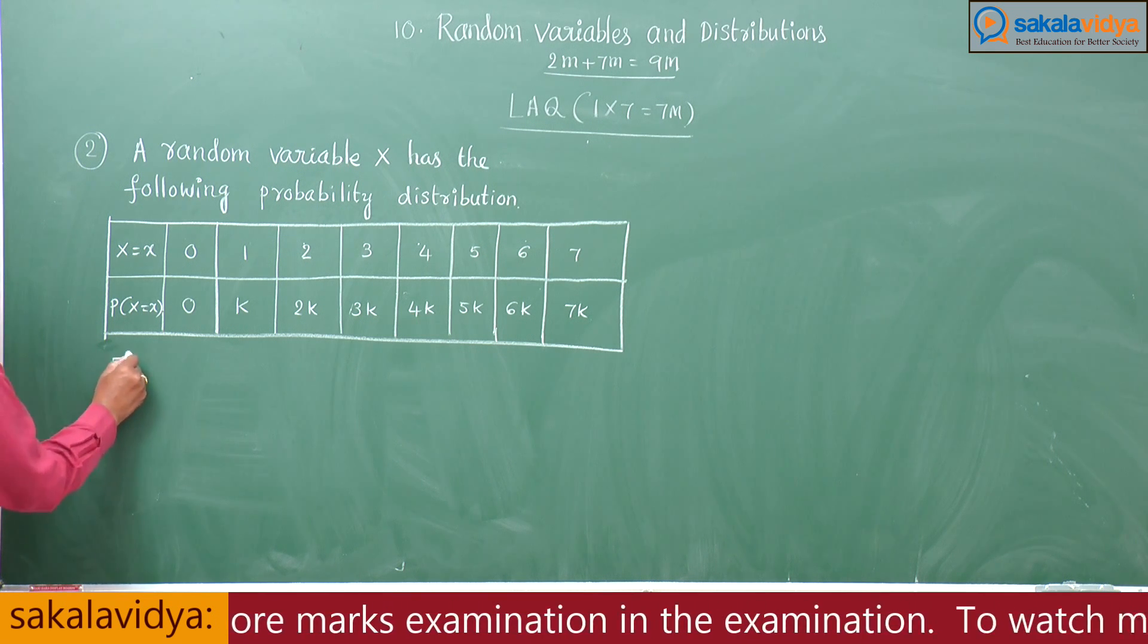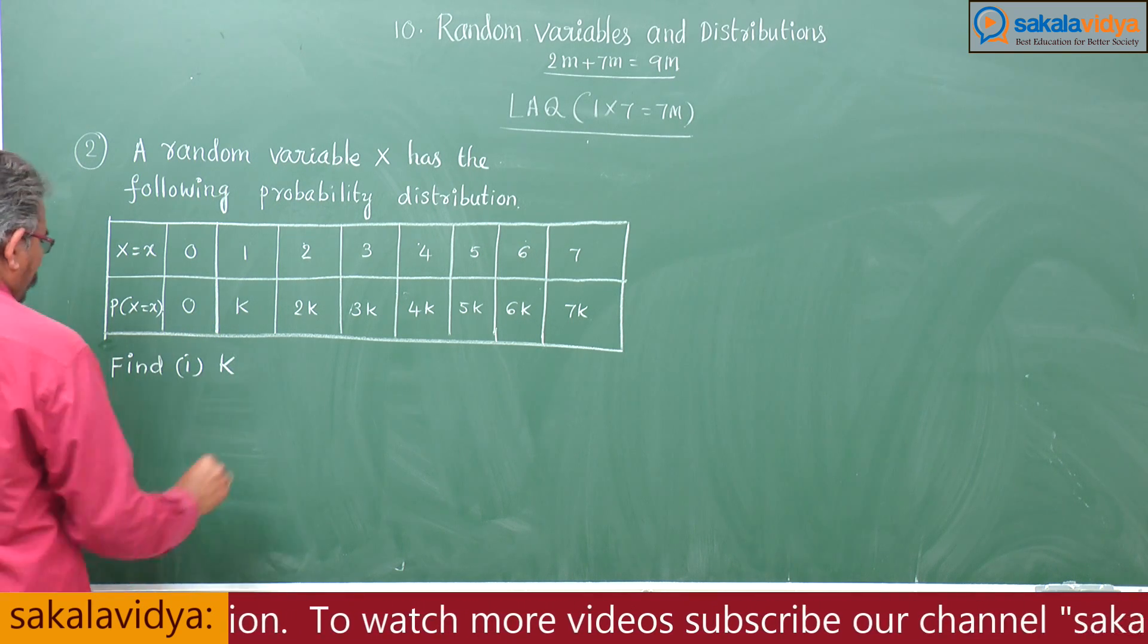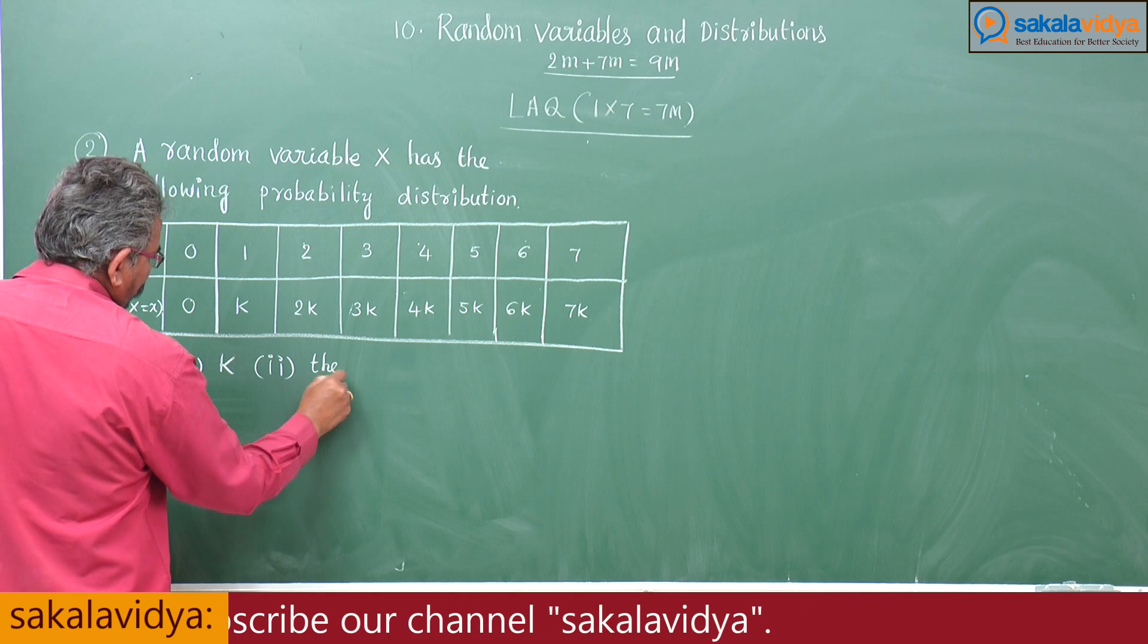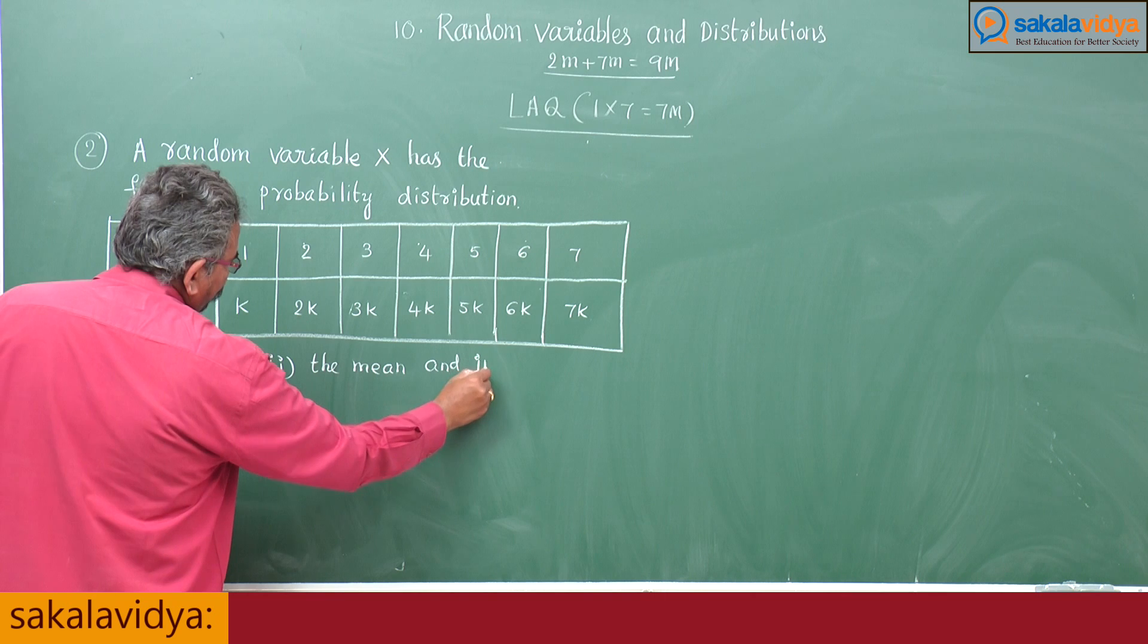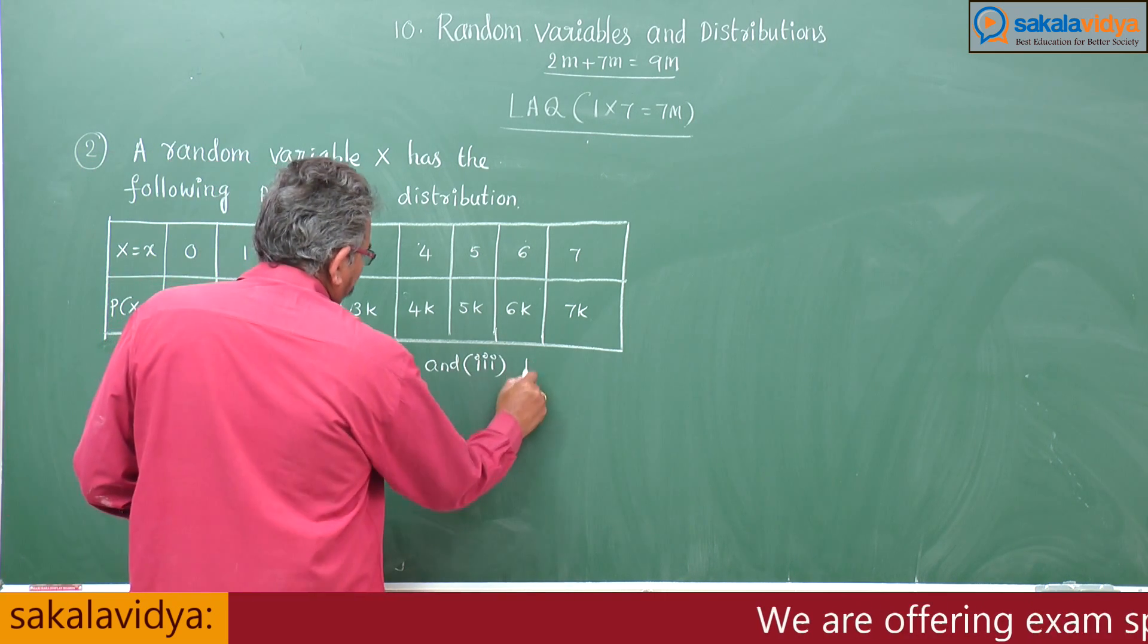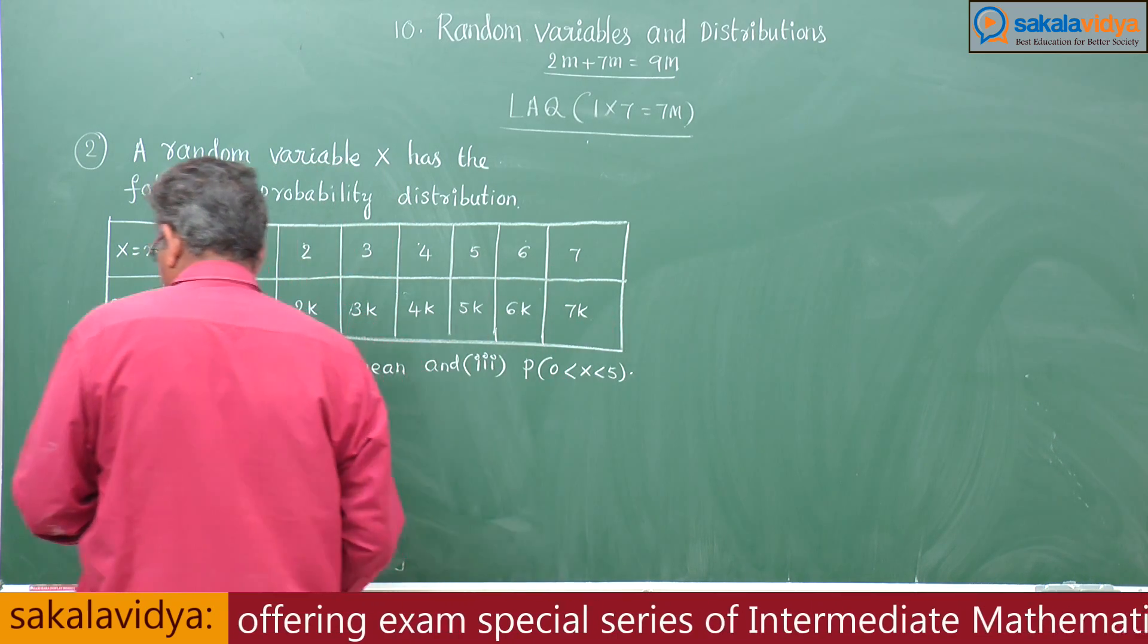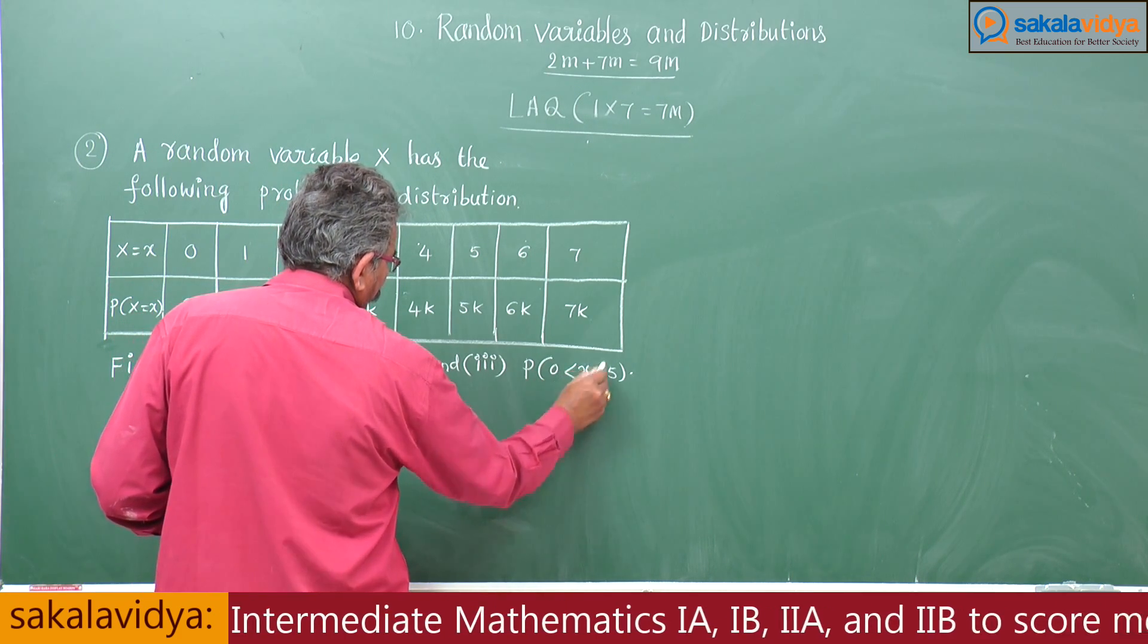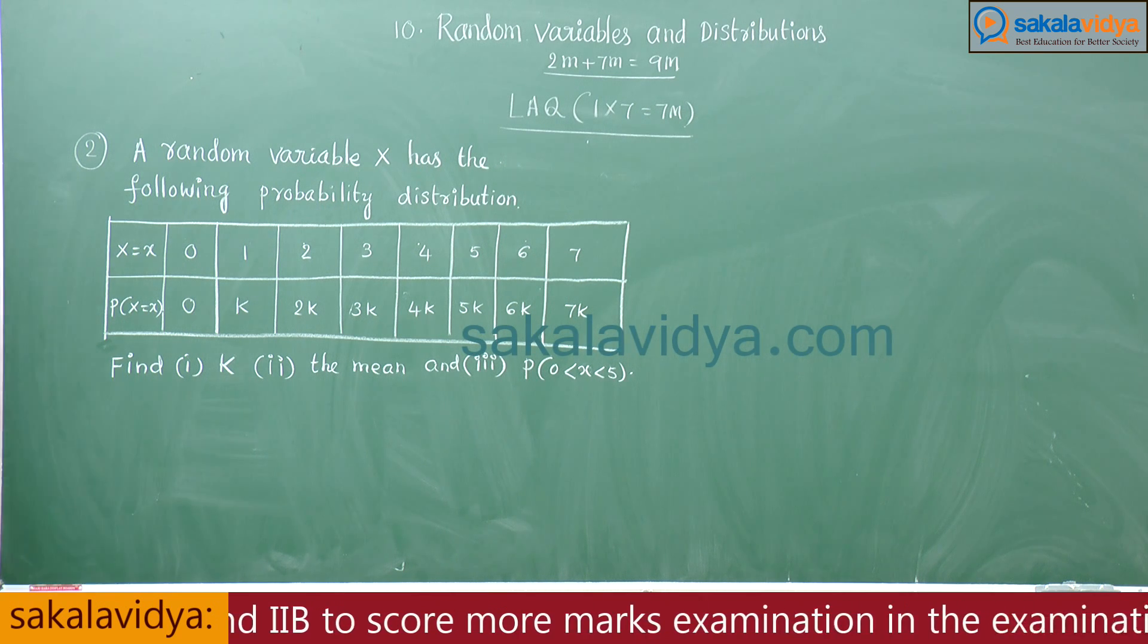Find first problem K, second problem the mean, and third problem P of 0 less than X, X less than 5.